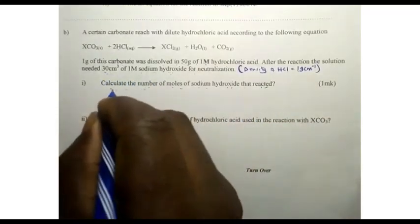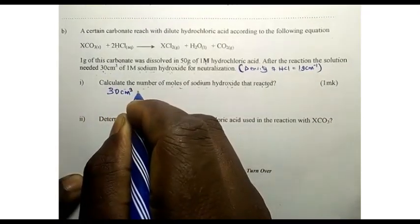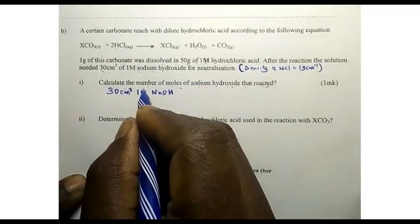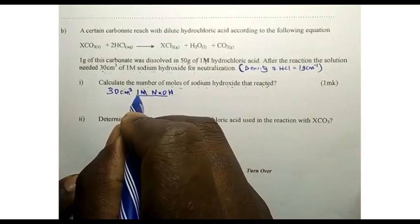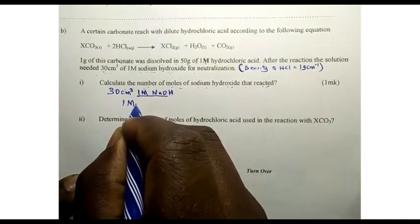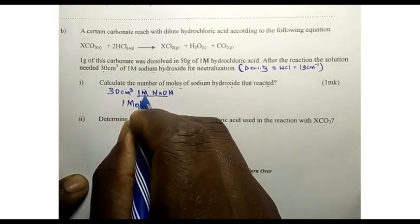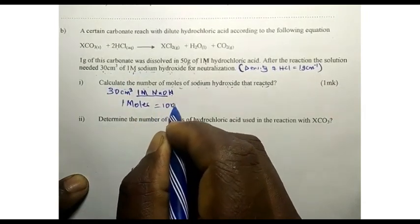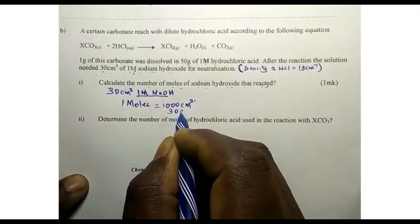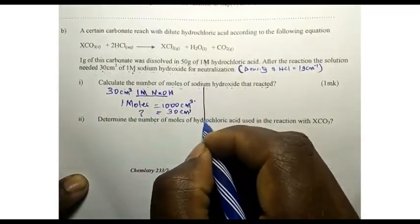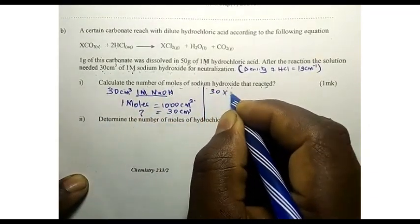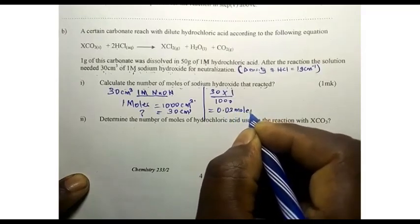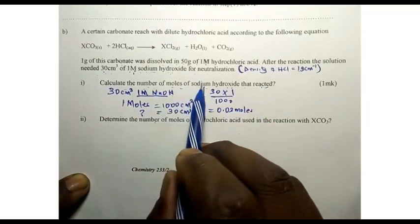We have been given that 30 cm³ of 1 molar sodium hydroxide reacted with the excess acid. Molarity means 1 mole is in 1000 cm³. So we calculate: 30 times 1 divided by 1000, which gives us 0.03 moles. So the number of moles of sodium hydroxide that reacted with excess HCl is 0.03 moles.